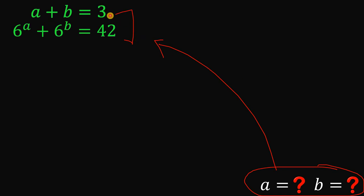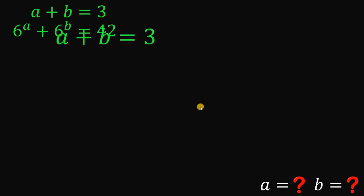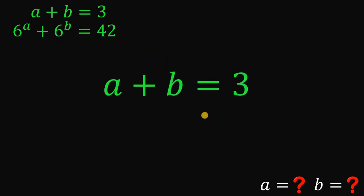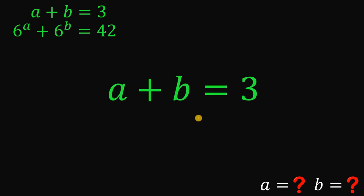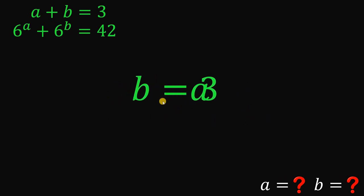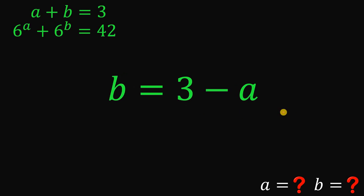To answer this question, let's take the first equation: A plus B equals 3. What we're going to do is get the value of B in terms of A. To do that, let's subtract A from both sides. And if we do that, we get B equals 3 minus A.